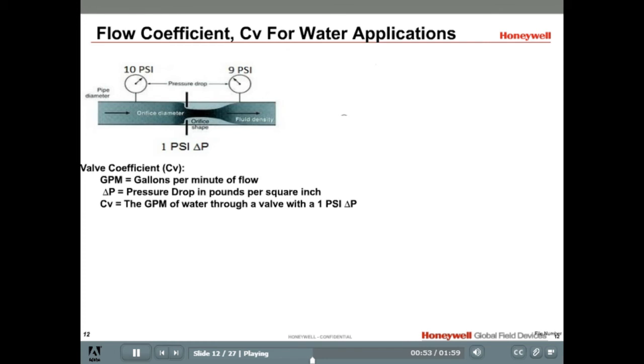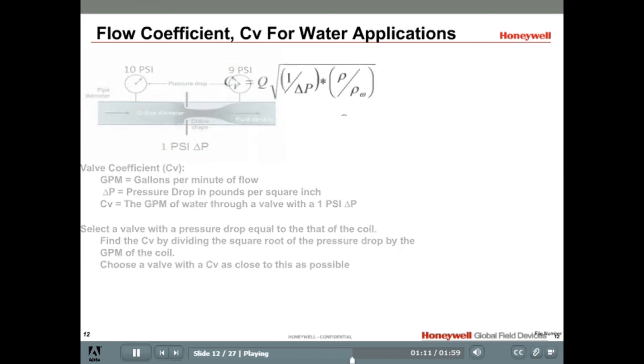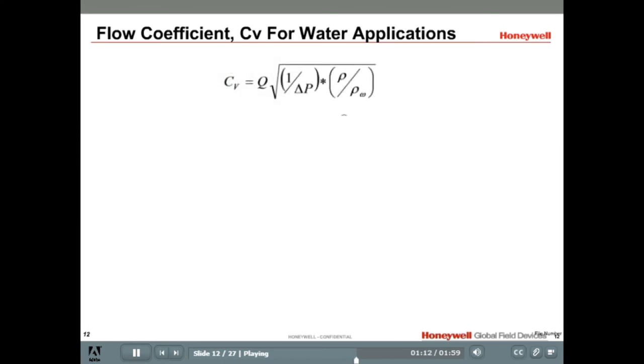To properly size the valve, it should have about the same pressure drop as the coil it controls. To do this, calculate the CV by plugging in the GPM through and the pressure drop across the coil. The mathematical equation for CV is shown here, where Q is the rate of flow in gallons per minute. The delta P is the pressure drop between the inlet and outlet port, and the rho divided by rho is the density, or specific gravity, of the media.